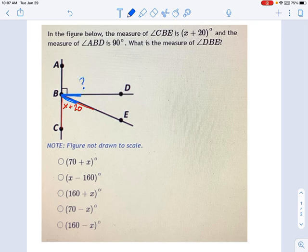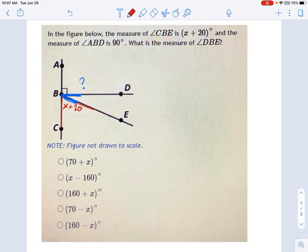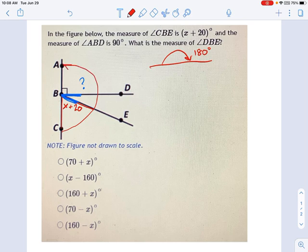Okay, so what you're going to have to do here is use one of the basic properties of planar geometry, which is that the measure of a line, if it's a straight line, is 180 degrees. Because all the way around the circle is 360 degrees, and a straight line is like half a circle.